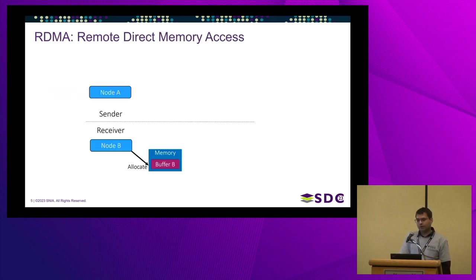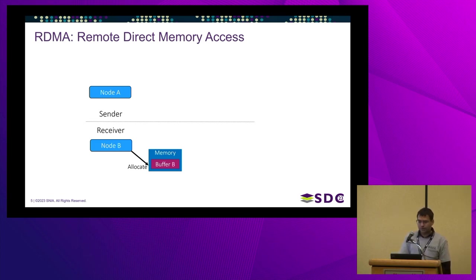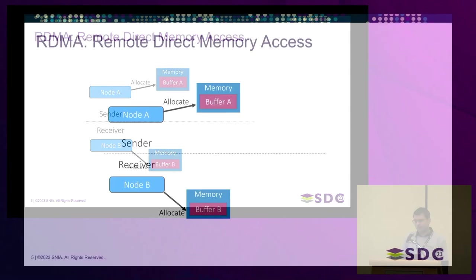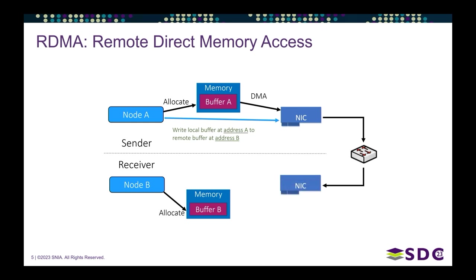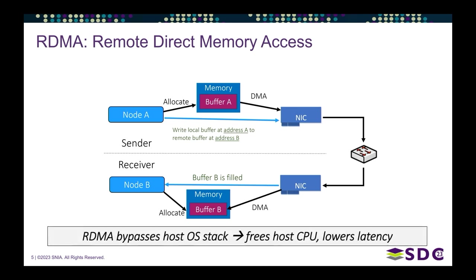Let's see this with an example. We have two nodes: node A, the sender, and node B, the receiver. Both allocate memory, and node A wants to send data to node B. It puts data into the buffer, rings the doorbell of the NIC, the NIC DMAs it down, it bounces through switches and routers to the receiver NIC, and the receiver NIC DMAs the data into the receiver node. This bypasses the OS stack, frees up the host CPU, and lowers latency.